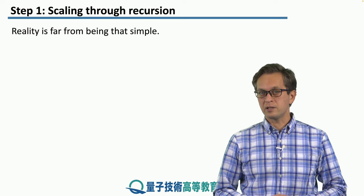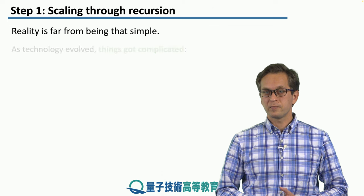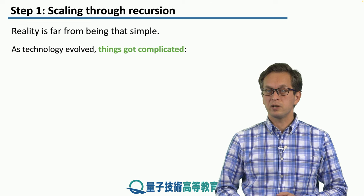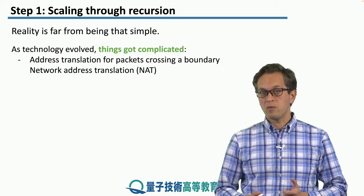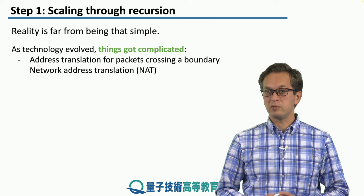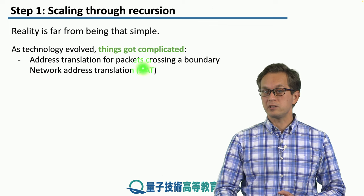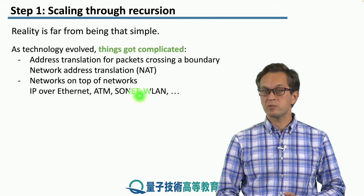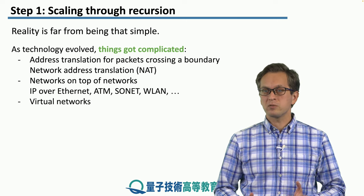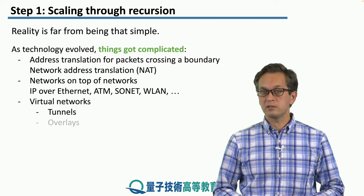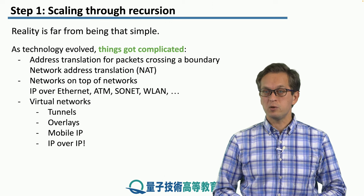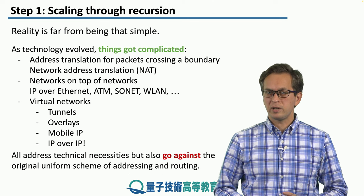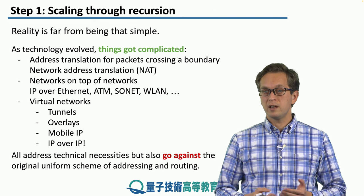This is a nice, simple picture, but the reality is far from being that simple. As technology evolved, things got complicated because of new different challenges and needs that had to be satisfied. One was address translation for packets crossing a boundary, given by the Network Address Translation, or NAT. Another was networks on top of networks — we had to use IP over Ethernet, ATM, Sonnet, and WLAN. Also there are virtual networks that include the concepts of tunnels, overlays, mobile IP, and IP over IP. All of these new technologies address real technical necessities, but at the same time they go against the original uniform scheme of addressing and routing in an internet network.